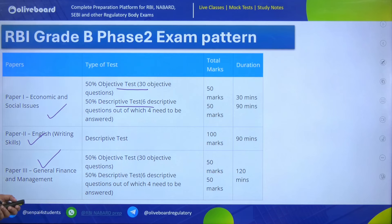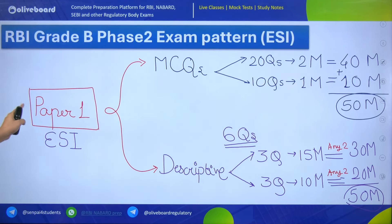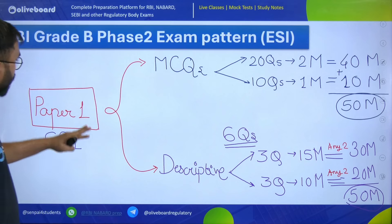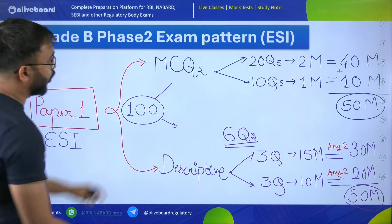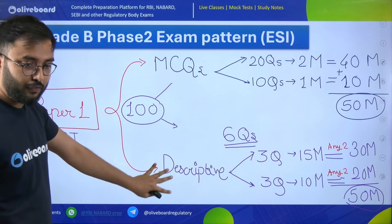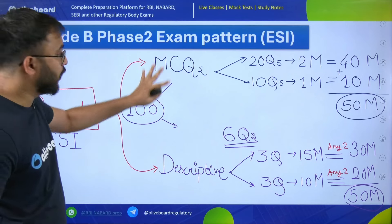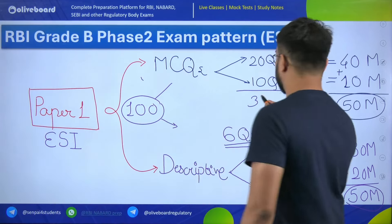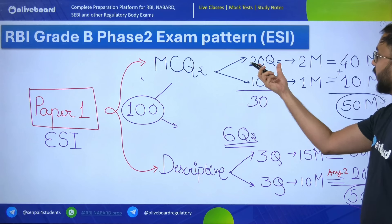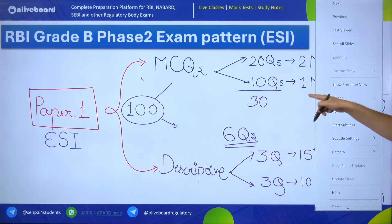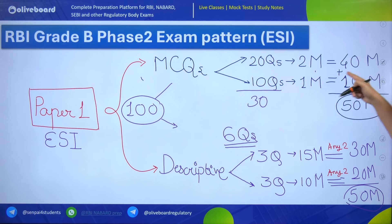This is the overall structure of the ESI paper. Paper 1, Economic and Social Issues, is for 100 marks split into 50% MCQ and 50% descriptive. In MCQs there are a total of 30 questions. You might wonder how 30 questions equal 50 marks — 20 questions are for 2 marks each, giving 40 marks, and 10 questions are for 1 mark each, giving 10 marks. 40 plus 10 equals 50 marks.